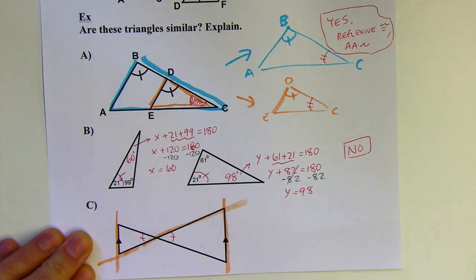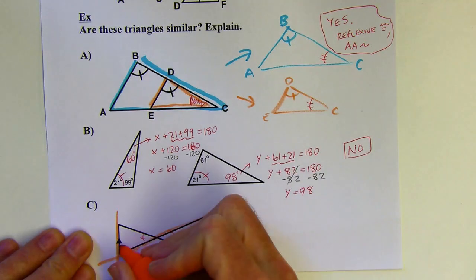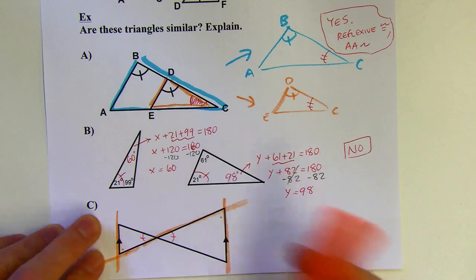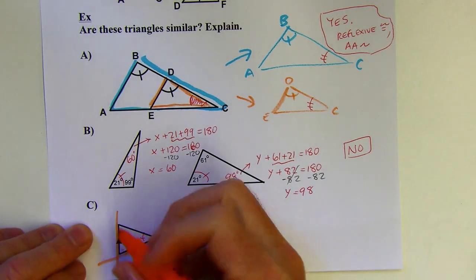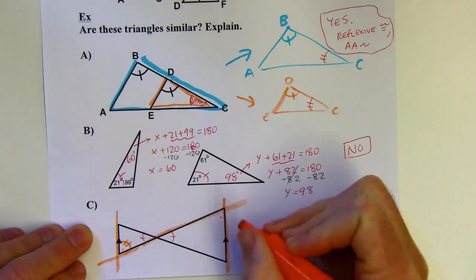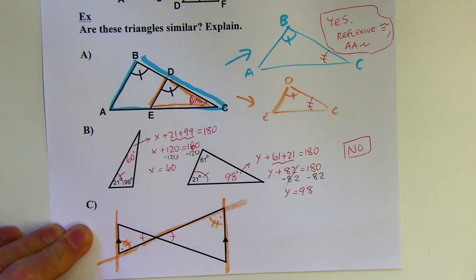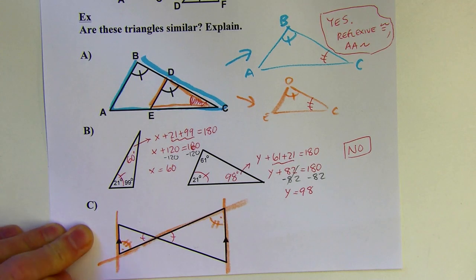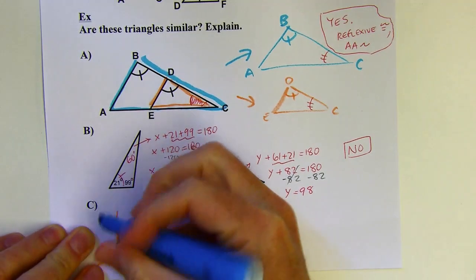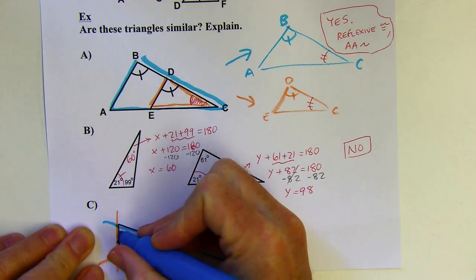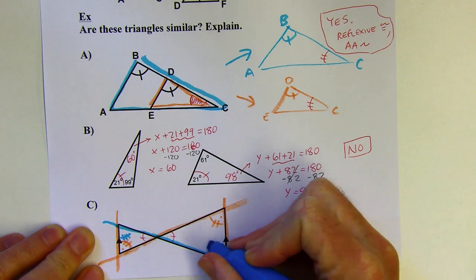If this is a transversal, well this angle and this angle would be on different sides of the transversal, alternate sides, on the inside of the tracks, interior. So those would be alternate interior angles. So I could say those two are congruent. I've got enough right there, but you could also get the last set of angles. You could use the third angle theorem or you could use this other transversal here and then do alternate interior angles again.